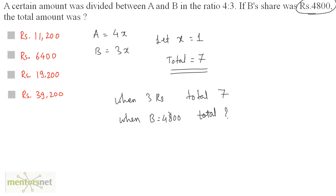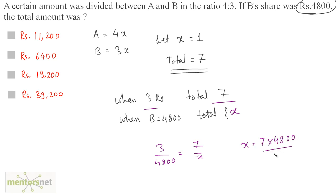This is a proportion: when B has 3, total is 7; when B has 4,800, total is x. So 3 by 4,800 equals 7 by x. Solving: x equals 7 times 4,800 divided by 3, which equals 7 times 1,600, giving 11,200. So the total amount is 11,200 rupees when B's share was 4,800. This is one of the easiest ways to solve this problem.